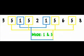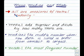Let's review. With the mean, you add all the numbers together and divide by the total numbers. The median is the middle number when the data is listed in order from smallest to largest. And the mode would be the most frequent number.